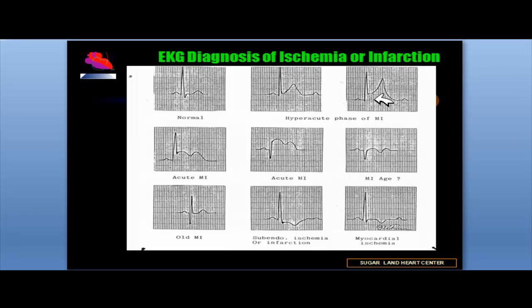The ST changes seen in acute pericarditis are quite different from a localized myocardial infarction in that the ST segment is noted throughout the 12-lead electrocardiogram. After several hours of coronary occlusion, the T wave becomes inverted and the ST segment is coved upwards. In acute pericarditis, the ST segment is not only elevated but is coving downward. This helps differentiate acute coronary ischemia from pericarditis, which is generally noted in multiple leads involving different regions of the myocardium.